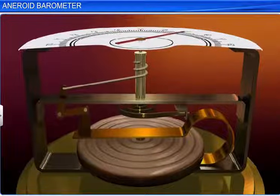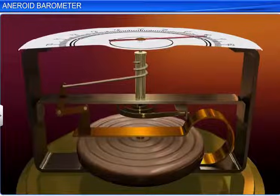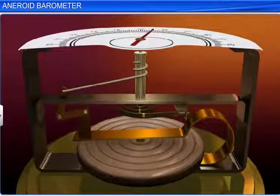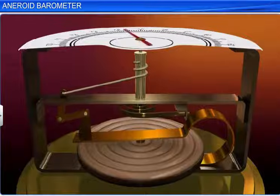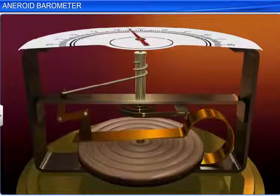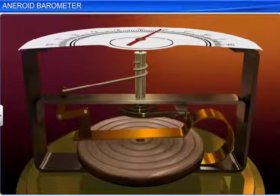When the atmospheric pressure decreases, the metallic box expands and the chain across the pulley loosens. The hair spring, connected to the pulley, helps the pointer adjust itself to the new atmospheric pressure.